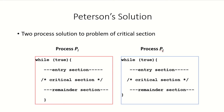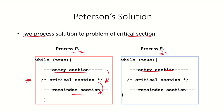In this video we are going to take a look at Peterson's solution. This is a two-process solution to tackle the problem of the critical section. There are two processes PI and PJ, and at any given point in time only one process should be allowed to manipulate data in the critical section. Code in the entry section ensures only one process enters the critical section while the other waits, and only when the first process moves to the remainder section is the other allowed to enter.